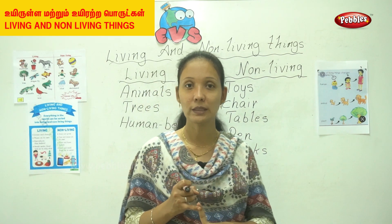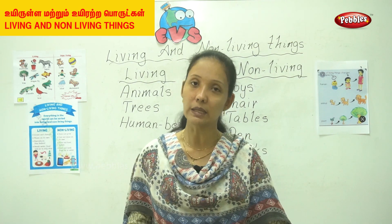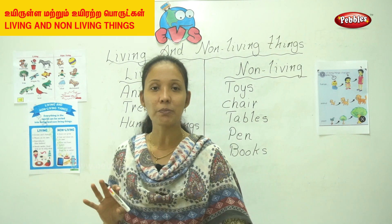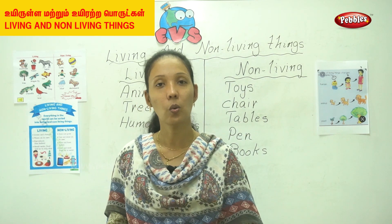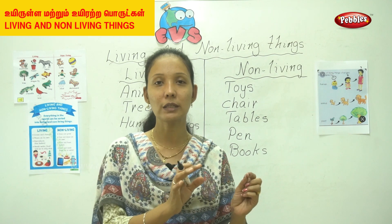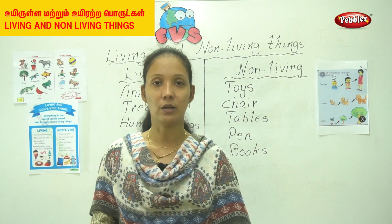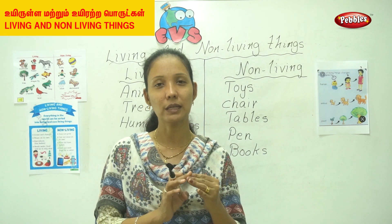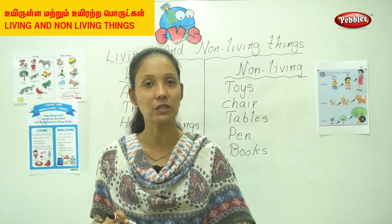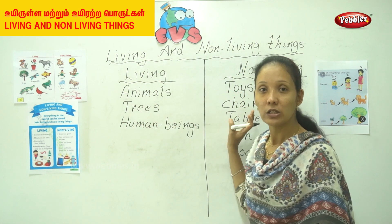Living things: they grow, they reproduce, they move, and they need food and water to live. Non-living things: they do not grow, they do not move from one place to another, and they do not need air and water. When you are at home, check all the living and non-living things around you and make a list of them.